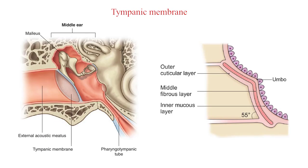The tympanic membrane, or ear drum, is a thin semi-transparent membrane which forms the partition between the external acoustic meatus and the middle ear. It is placed obliquely, making an angle of about 55 degrees with the floor of the external acoustic meatus. So the tympanic membrane faces downwards, forwards, and laterally, so as to catch the sounds reflected from the ground.